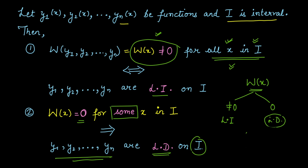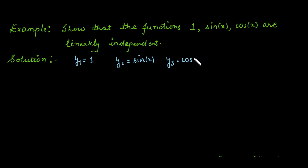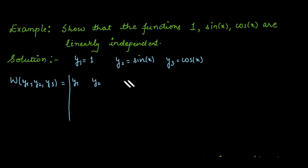Let's understand this concept with an example. In the first example, we need to show that these functions are linearly independent. We take y1 = 1, y2 = sin(x), y3 = cos(x). Now calculate the Wronskian W(y1, y2, y3) as the determinant with the functions in the first row, their first order derivatives in the second row, and their second order derivatives in the third row.